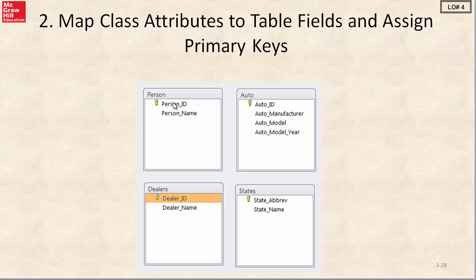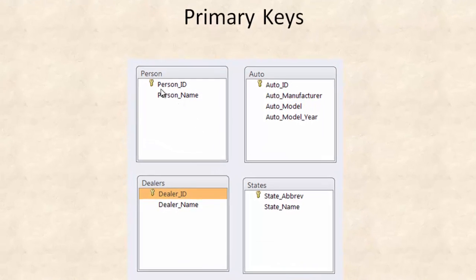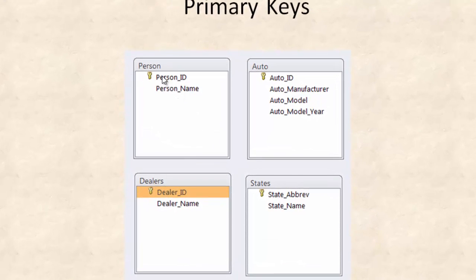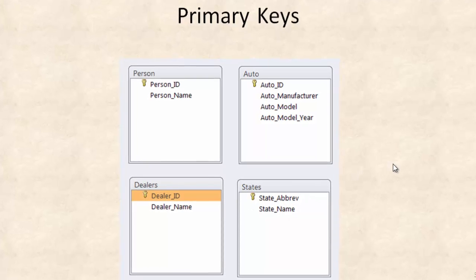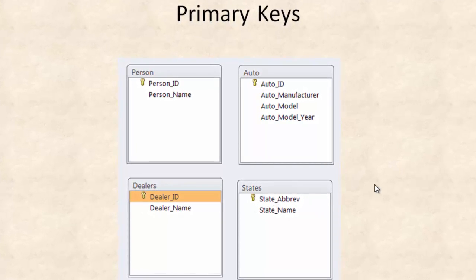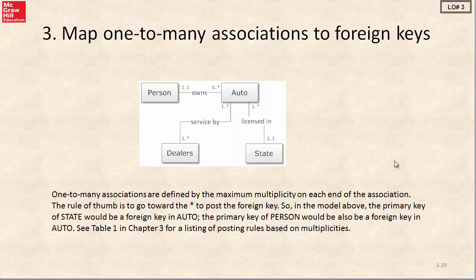We need to pick a primary key for each table. I have assigned primary keys — person ID for persons, auto ID for autos, dealer ID for dealers, and the state abbreviation as the primary key of states. Now we need to create a set of foreign keys that would allow us to link our tables together.